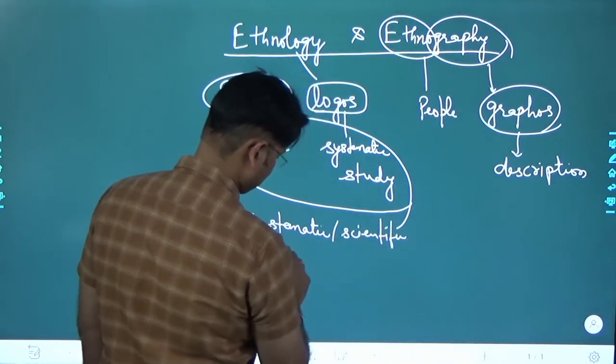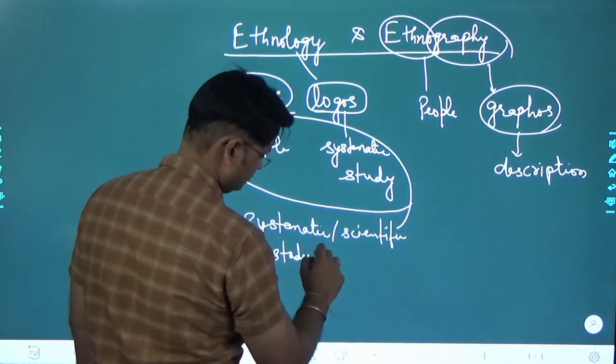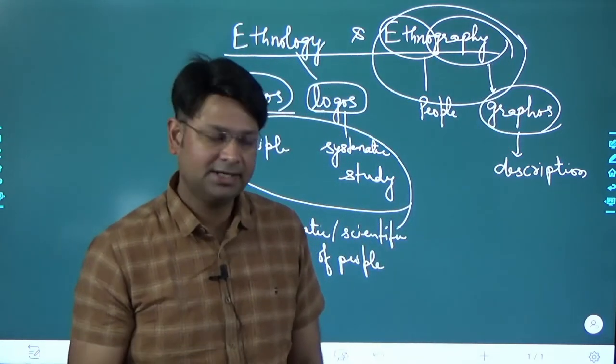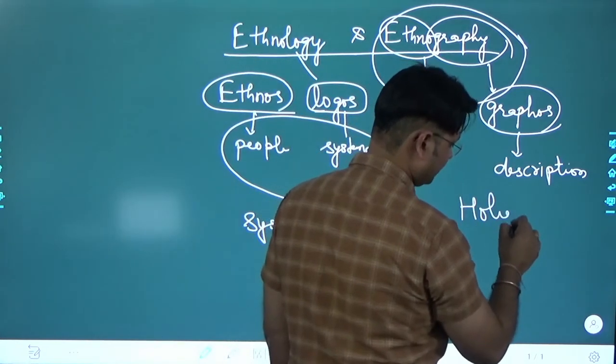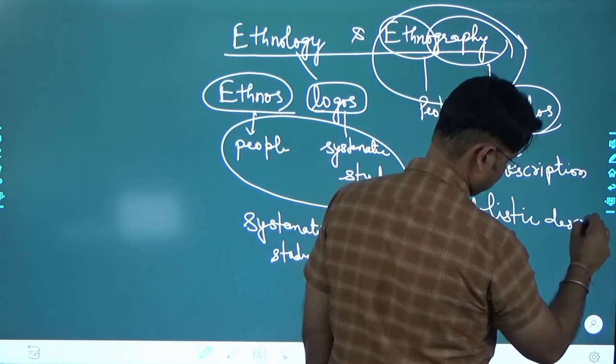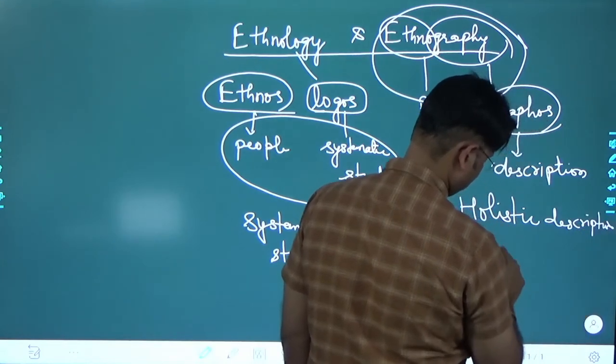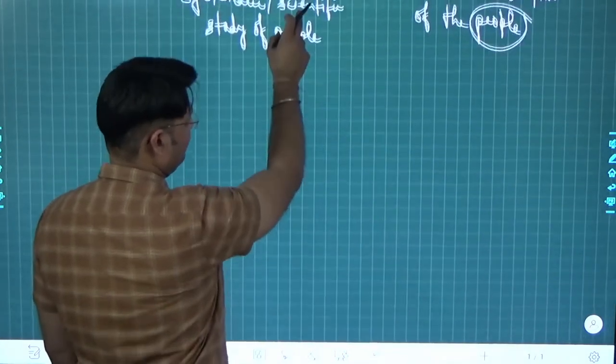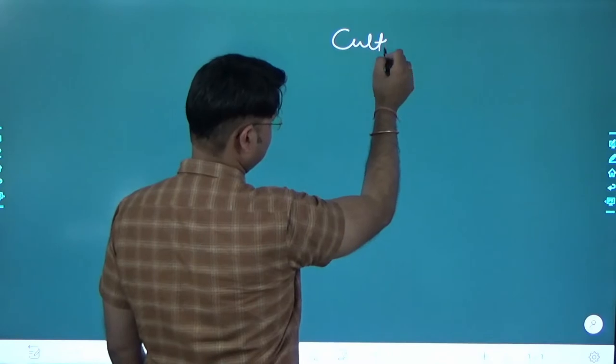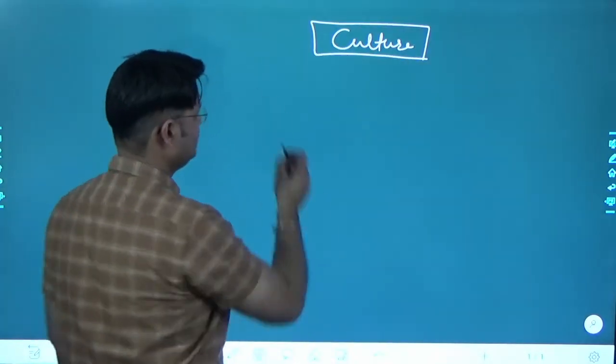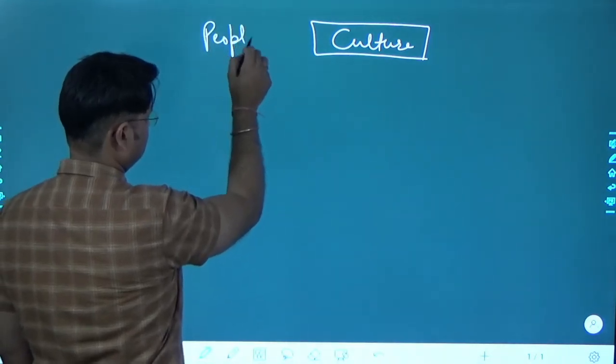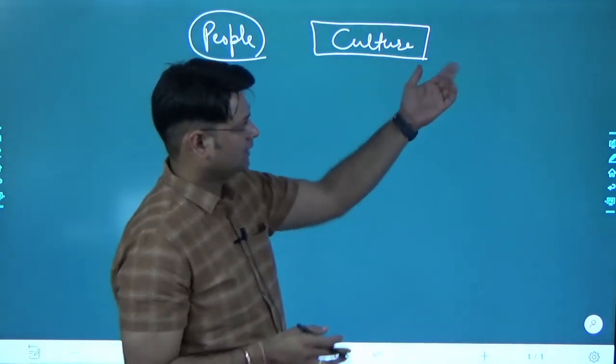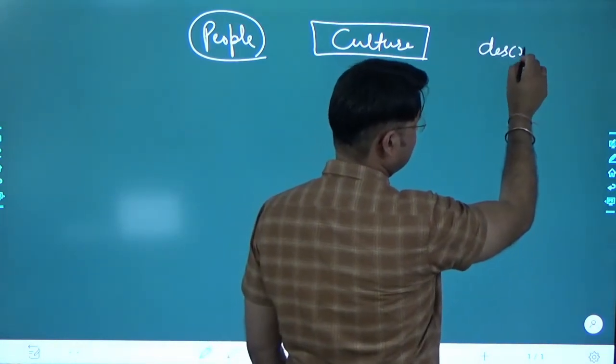Whereas ethnography is the holistic description of the people. Here this word people means a particular culture. People means culture. So ethnology scientifically studies, it is scientific study. On the other hand, ethnography is the descriptive study, it is the detailed description.